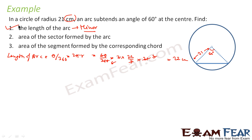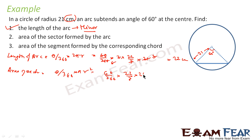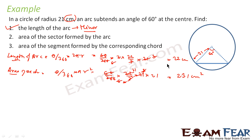The second part is the area of the sector formed by the arc. The formula for area of sector is theta by 360 into πr². This equals 60 by 360 into 22/7 into 21 into 21. Simplifying — 7 and 3 cancel, 6 and 6 cancel — we get 11 into 21, which is 231 cm². Note the unit: area is in centimeters squared, length in centimeters.